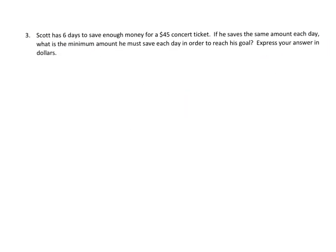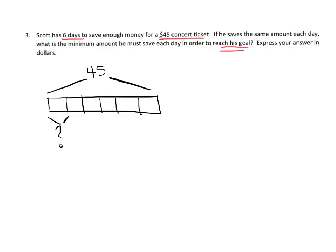And the last problem for this video, Scott has 6 days. Oh boy, he's running out of time to save enough money for a $45 concert ticket. So if he saves the same amount each day, what is the minimum amount he must save each day in order to reach his goal? So we're going to model this. His goal is $45 and he has 6 days. So we're going to divide that up into 6 equal units. So we want to know how much is one of those days.